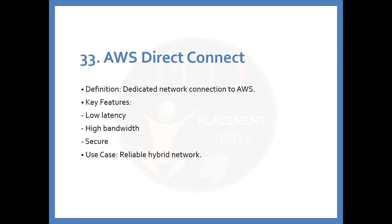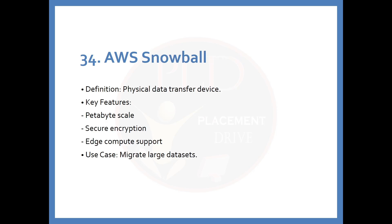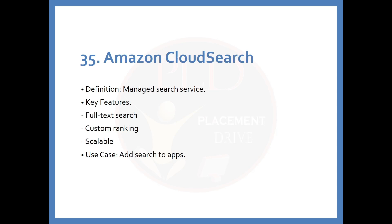The 33rd service is AWS Direct Connect. The definition is: a dedicated network connection to AWS. Key features include low latency, high bandwidth, and security. The use case is a reliable hybrid network. The 34th service is AWS Snowball. The definition is: a physical data transfer device. Key features include petabyte-scale transfer, secure encryption, and edge compute support. The use case is migrating large datasets.